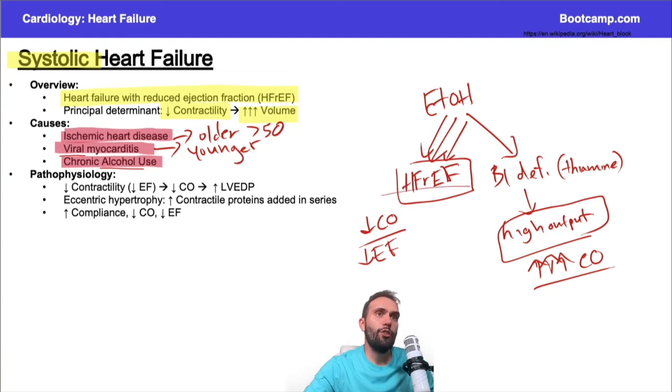To go through this pathophysiology one last time: decreased contractility, decreased ejection fraction, lower cardiac output. That's going to lead to a larger left ventricular end-diastolic pressure. I'm not ejecting as much blood, so I have more pressure kind of left over in that ventricle. This, and this is particularly high yield, is an eccentric hypertrophy.